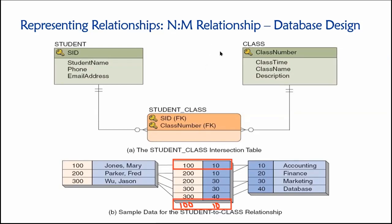Functionally, what that means in this class registration scenario is that each student could take a particular class just once. There's no way in this design to allow a student to take the same class more than once. Because if I tried to add another row for student 100 and class 10, remember it's a composite primary key — that primary key would already exist and the database would throw an error. It would not allow me to enter that row of data.